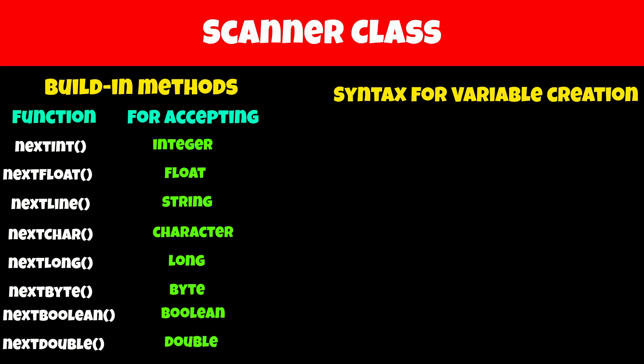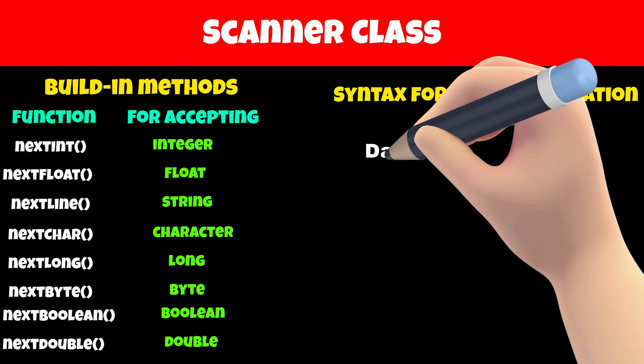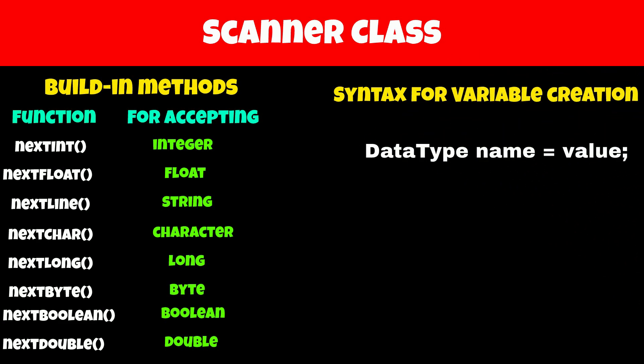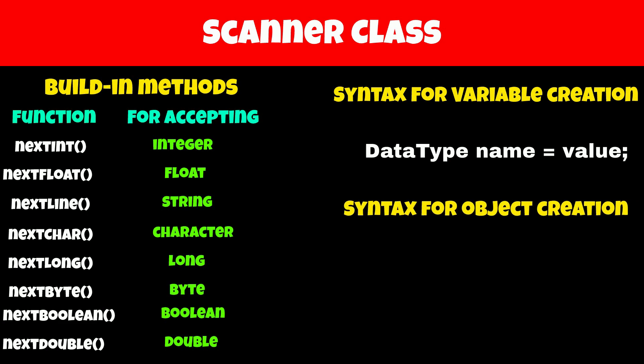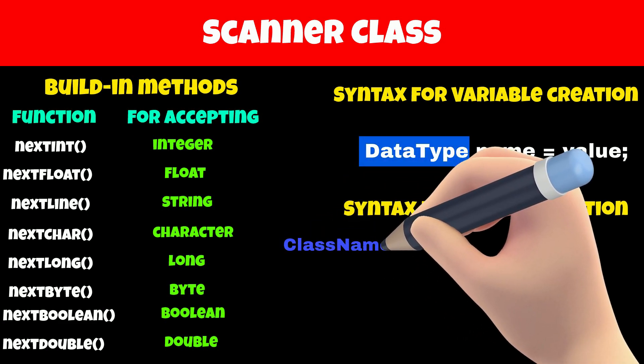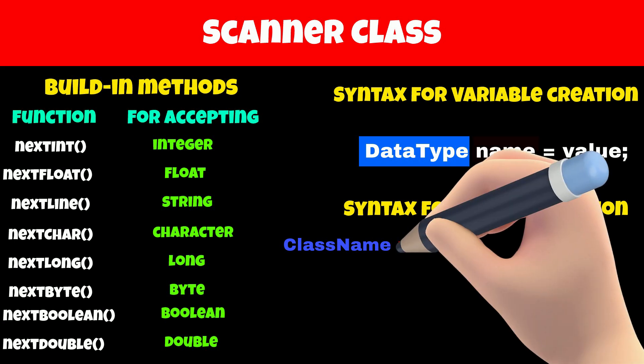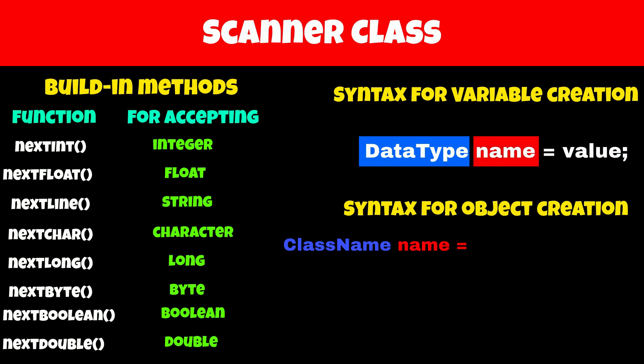The syntax for object creation is similar to variable creation. First comes the data type, followed by the name of the variable, then an equal sign and then the value. If we want to create an object of a class, the data type will be the name of the class, and then comes the variable or object name — we can give any name of our choice.